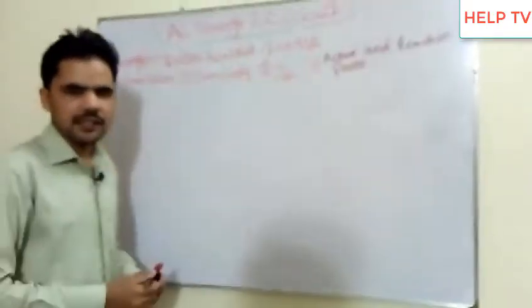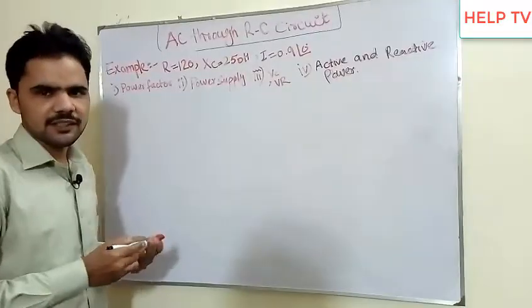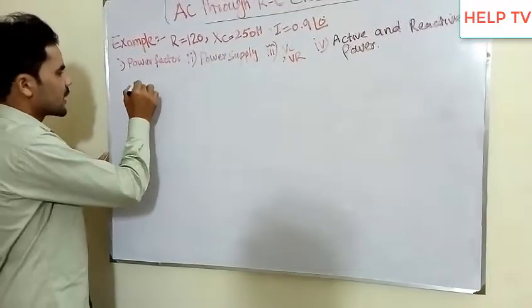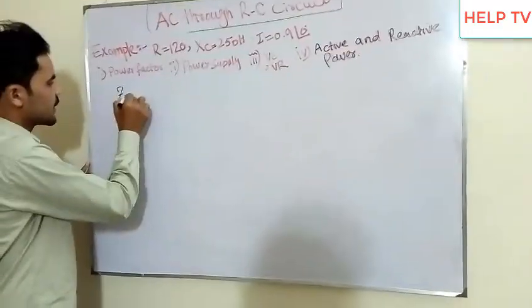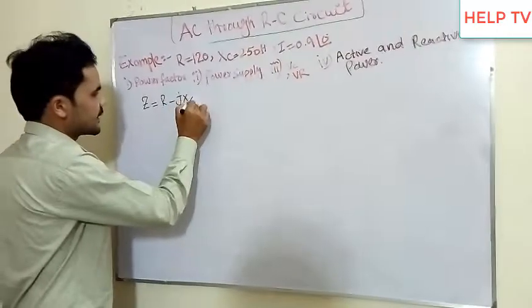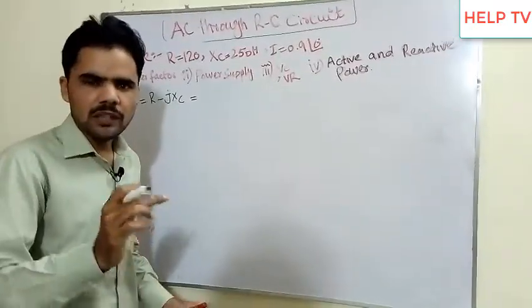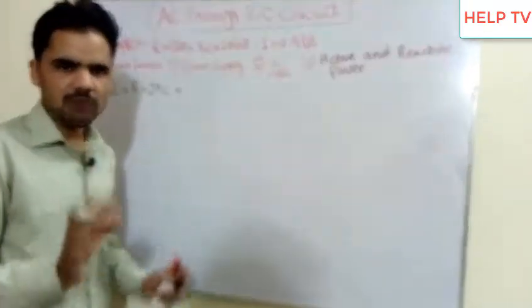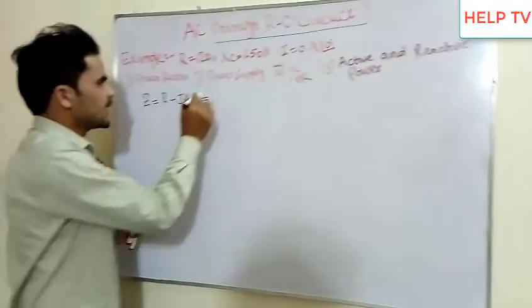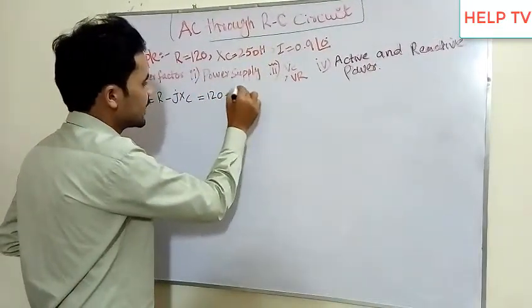We will use all these formulas to solve the RC circuit problem. First of all, we need to calculate Z. We have Z equals R minus jXC. I will give you the direct value from the calculation.